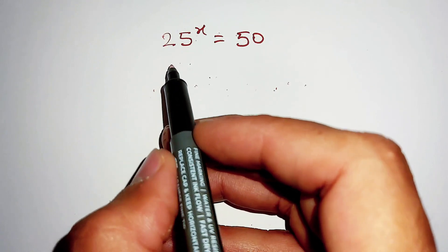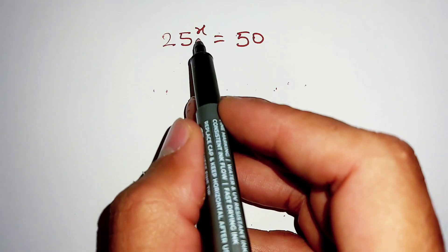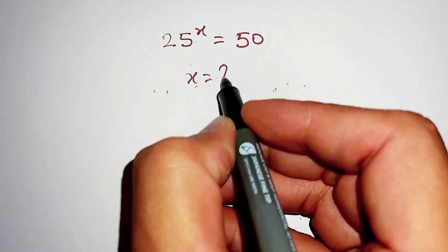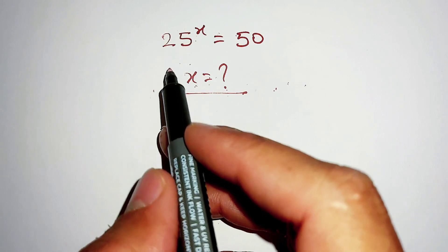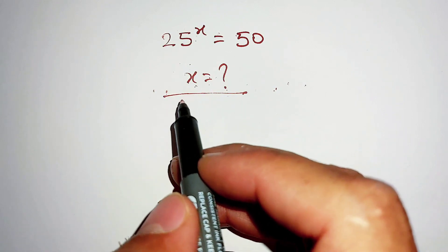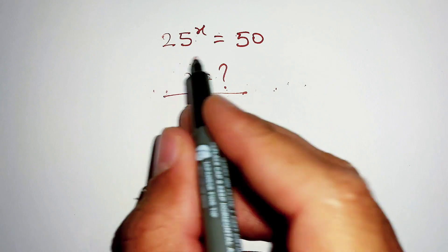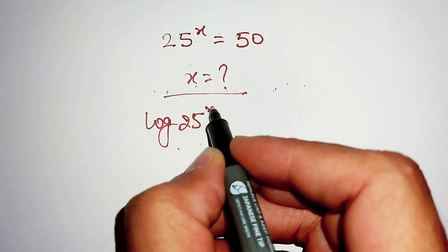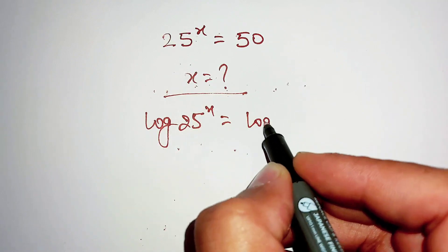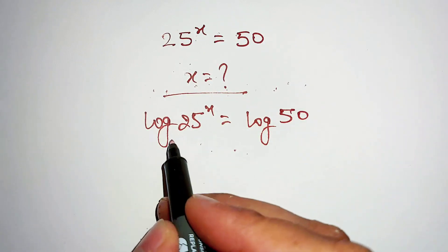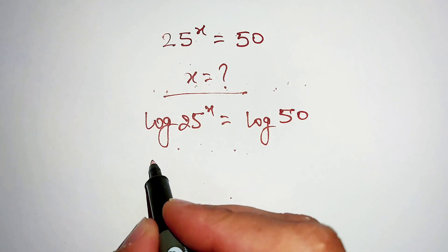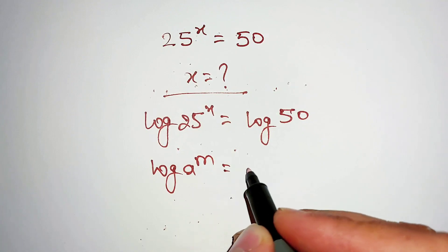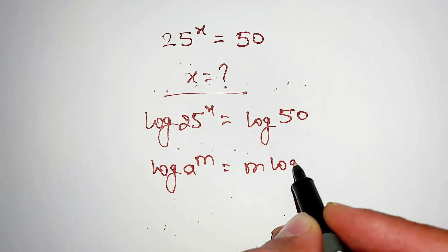Hello dosto, the question is 25 power x equal to 50 and we have to find the value of x. We are solving this question by using logarithm — take log both sides. We use the formula: log a power m equal to m log a.